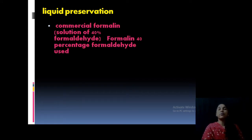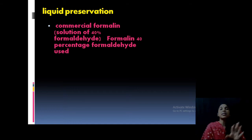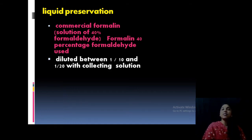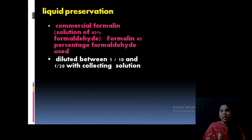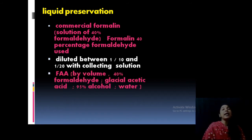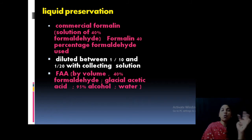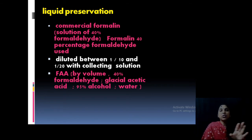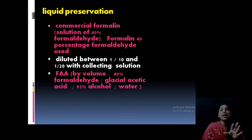The first method is liquid preservation. We usually use formalin or formaldehyde — we prefer 40% formaldehyde for liquid preservation. It is diluted 1/10 or 1/20 with the collecting solution. If it is river water, take the river water and dilute it with formaldehyde; if it is pond water, dilute it with formaldehyde. Another best method is to fix or preserve the algae in FAA — that is formaldehyde, glacial acetic acid, and alcohol plus water — in a particular ratio. That combination is effective for liquid preservation.